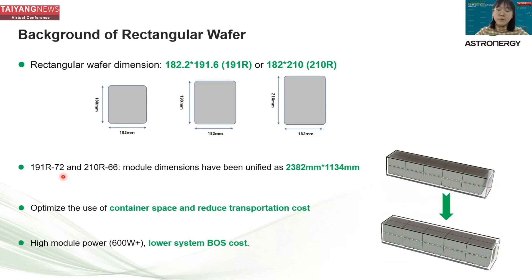The model formats include 191 rectangular 72 and 210 rectangular 66. The good news is the module dimensions have been unified as 2382×1134, which is friendly to the supply chain and downstream compatibility. Rectangular wafers became popular originally to optimize container space utilization and reduce transportation costs, while also providing high power output to lower system BOS cost.